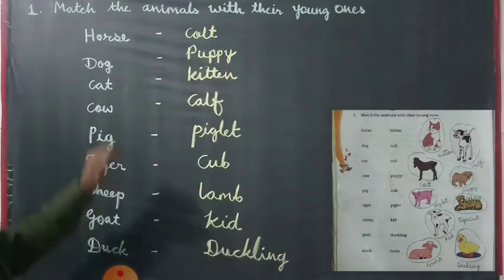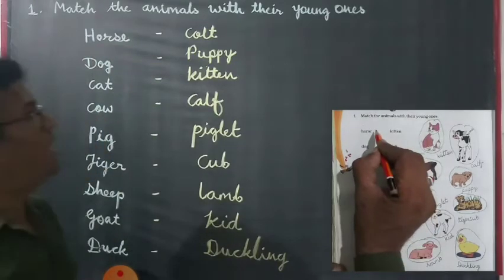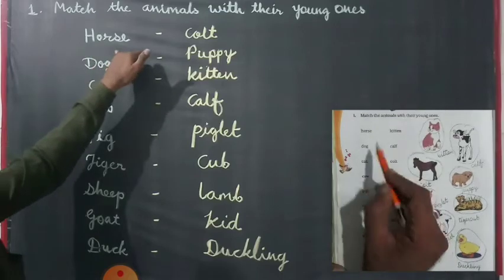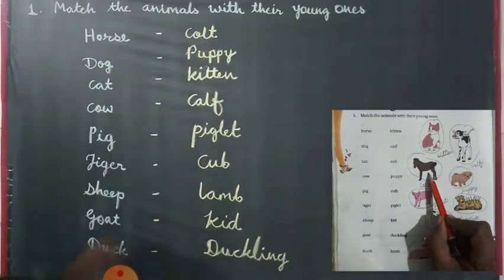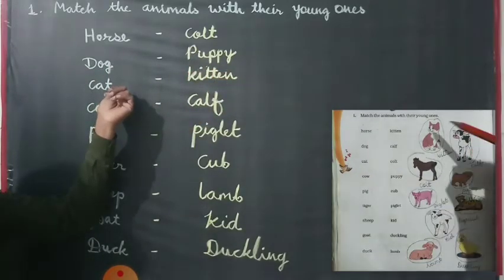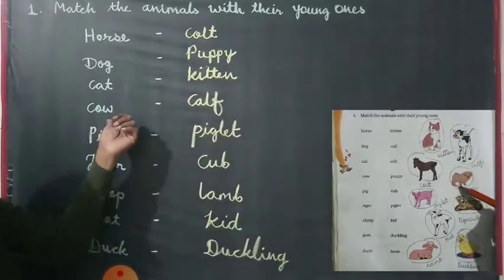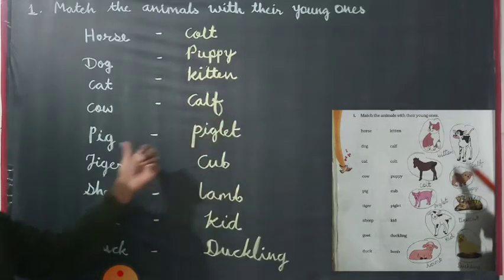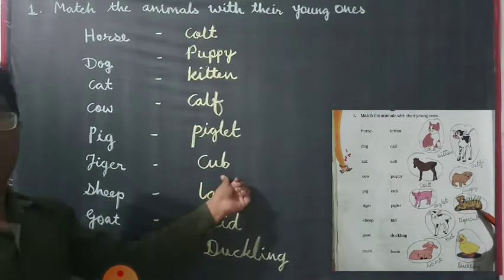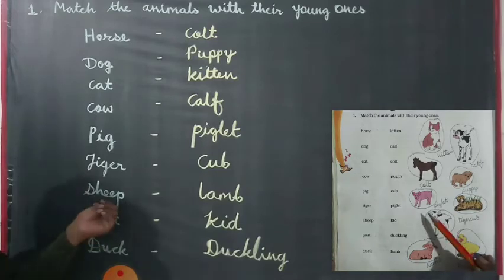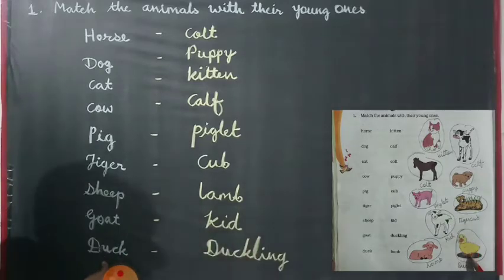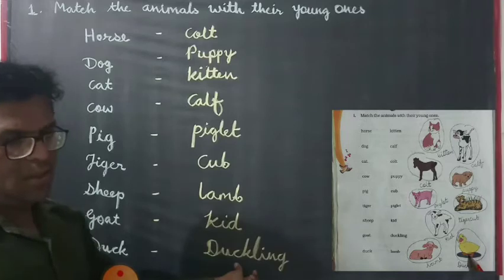Now we repeat all the names of animals and their young ones. The horse's young one is called colt. The young ones of dog is called puppy. The young ones of cat is called kitten. The young ones of cow is called calf. The young ones of pig is called piglet. The young ones of tiger is called cub. The young ones of sheep is called lamb. The young ones of goat is called kid. And the young ones of duck is called duckling.